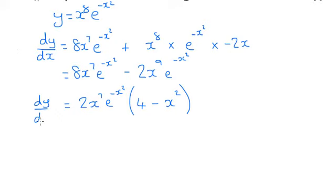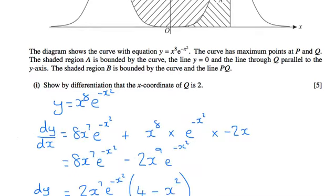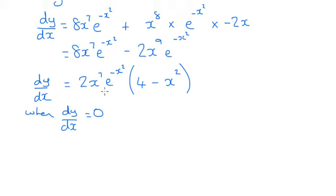That's our dy/dx. Now we are asked to find out the coordinates of Q, and you can see that Q is a stationary point. So when dy/dx equals 0, that's going to help us find out what Q is. We're going to have 2x^7 times e^(-x^2) times (4 - x^2) equals 0.